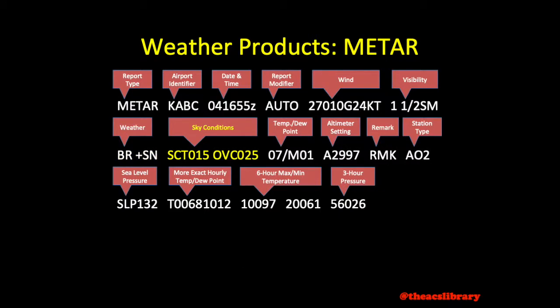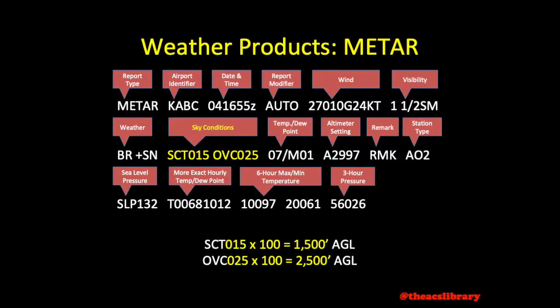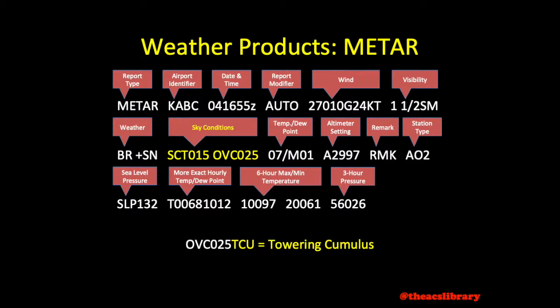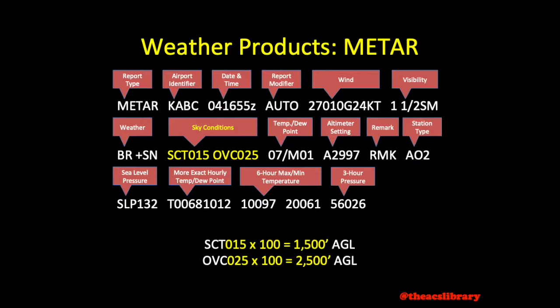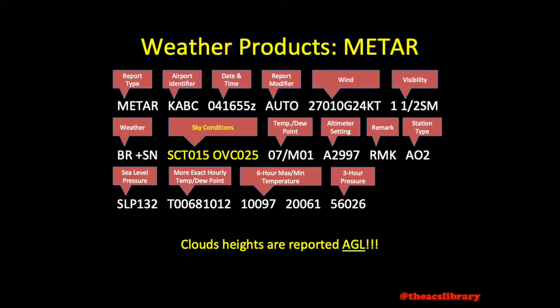Sky condition is coded as the three-digit cloud coverage — clear, few, scattered, broken, or overcast — followed by the three-digit height of the cloud base in hundreds of feet. This may be followed by CB for cumulonimbus clouds or TCU for towering cumulus clouds. In this example, we have a scattered layer at 1,500 feet and an overcast ceiling with bases at 2,500 feet. Cloud heights are reported AGL or above ground level.